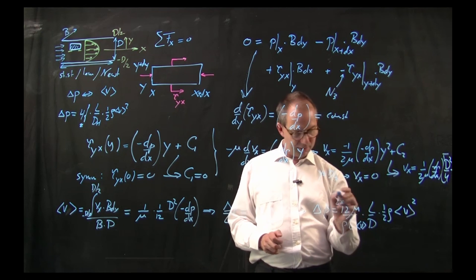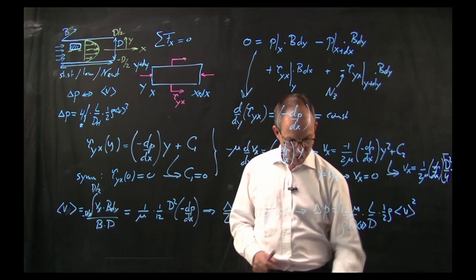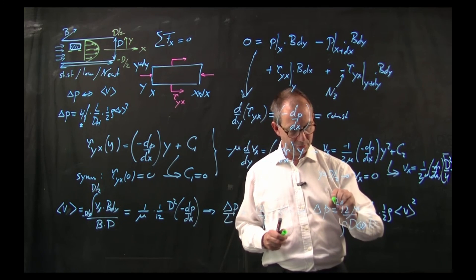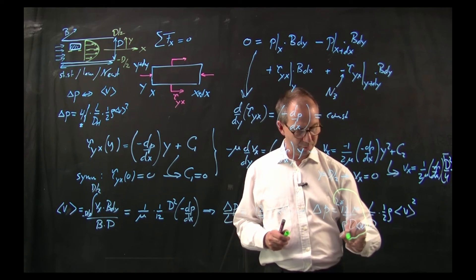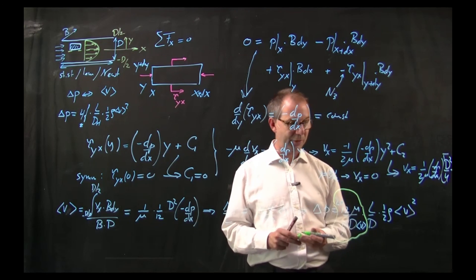And you now see coming that this part has to do with my fanning friction factor. Delta p, 4f, L over d, half rho v squared.